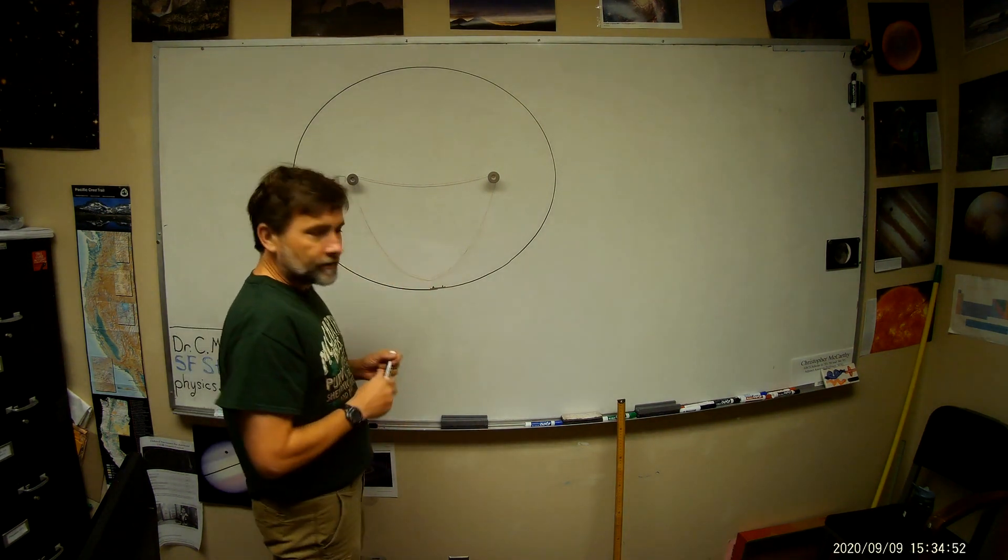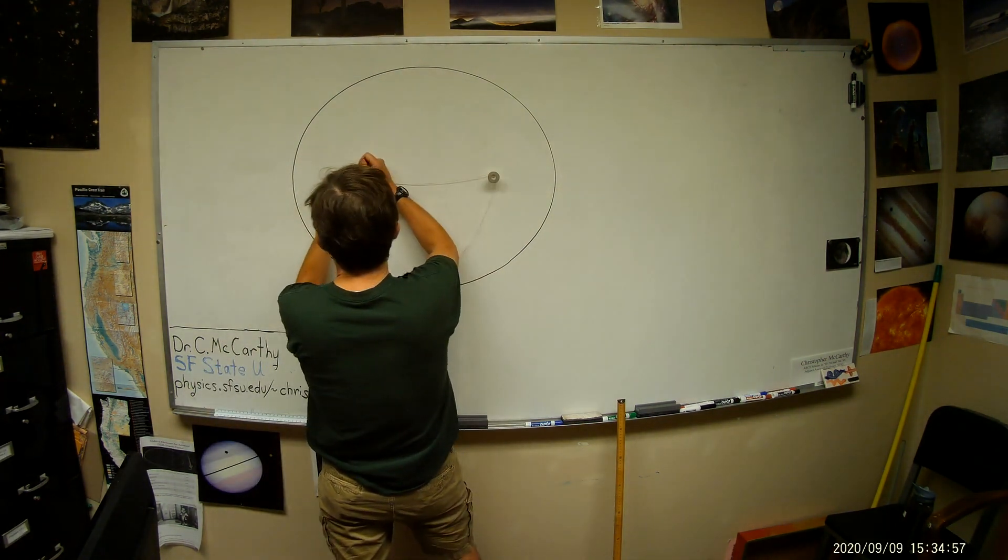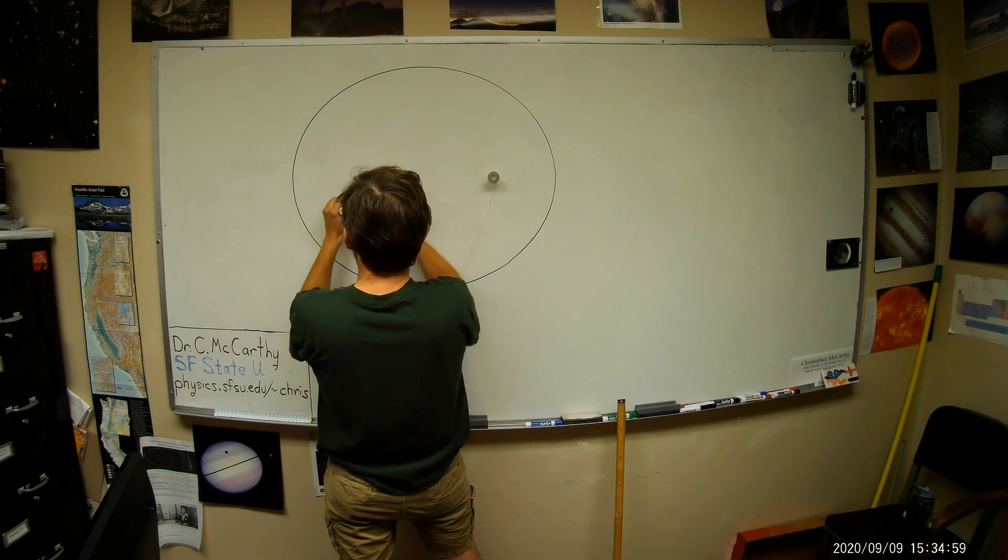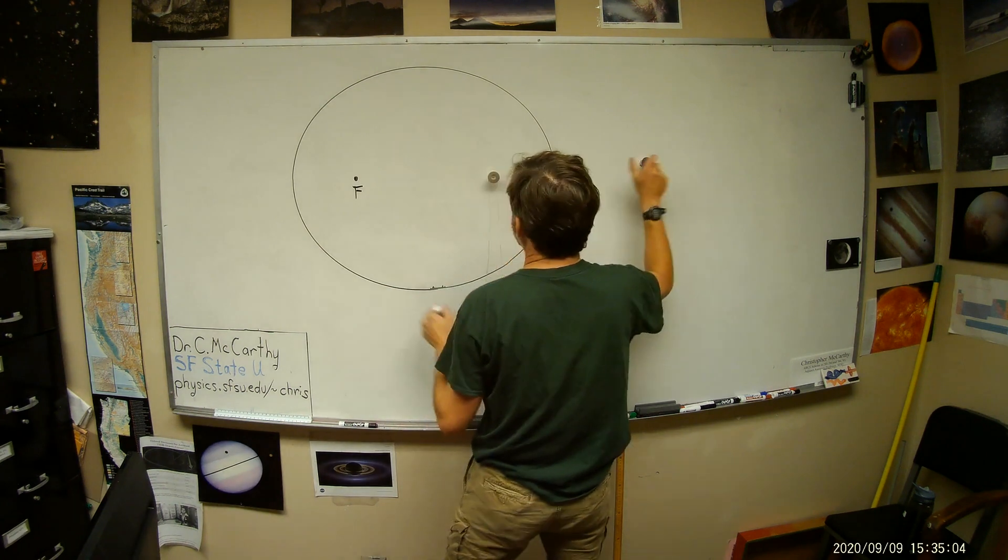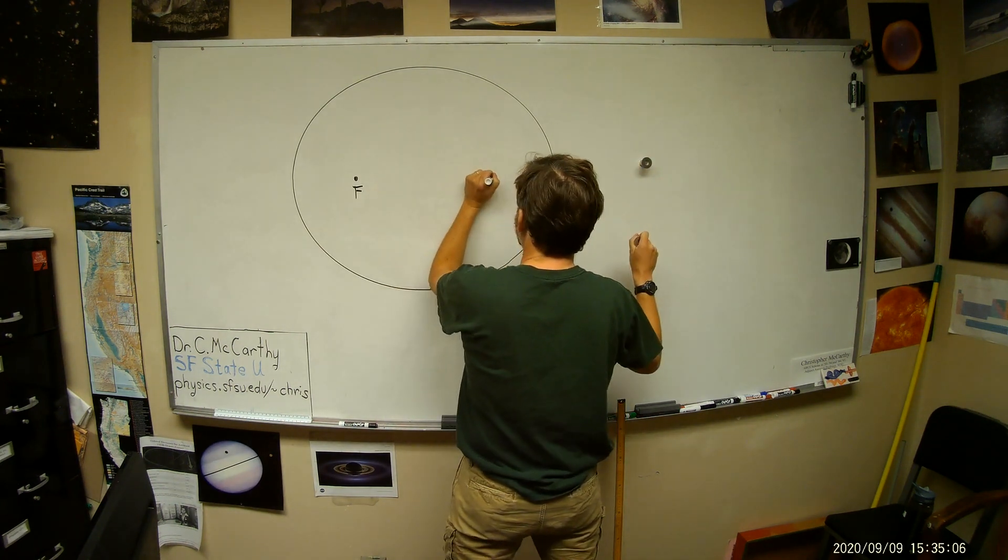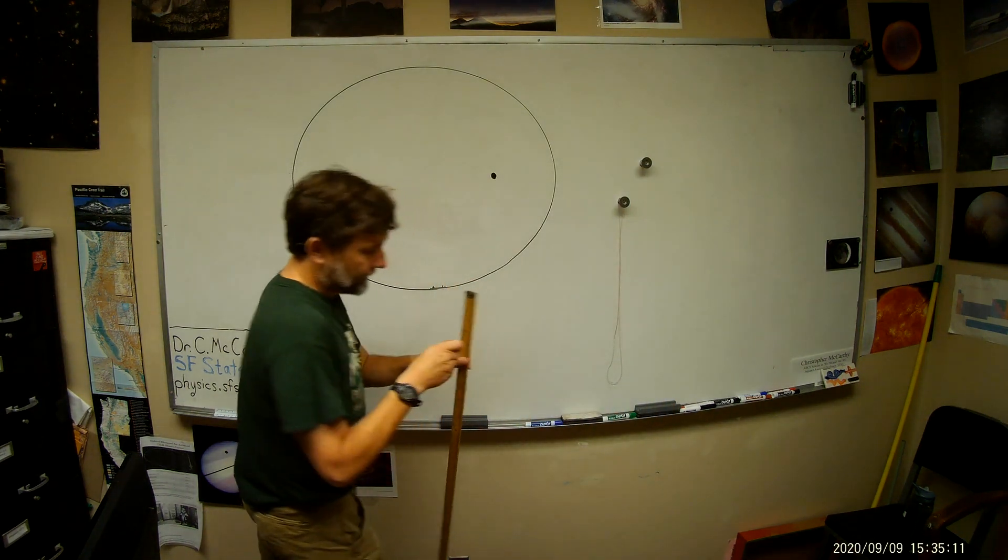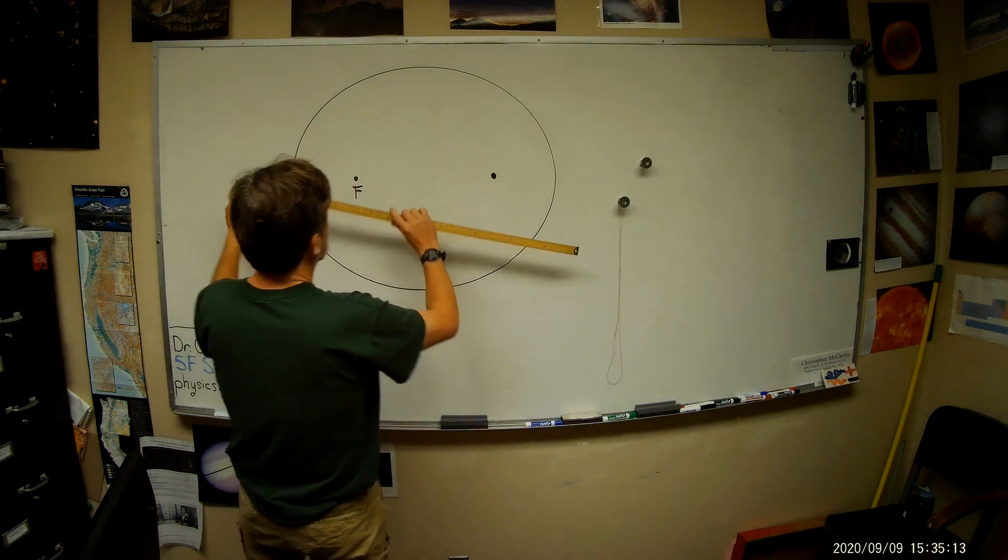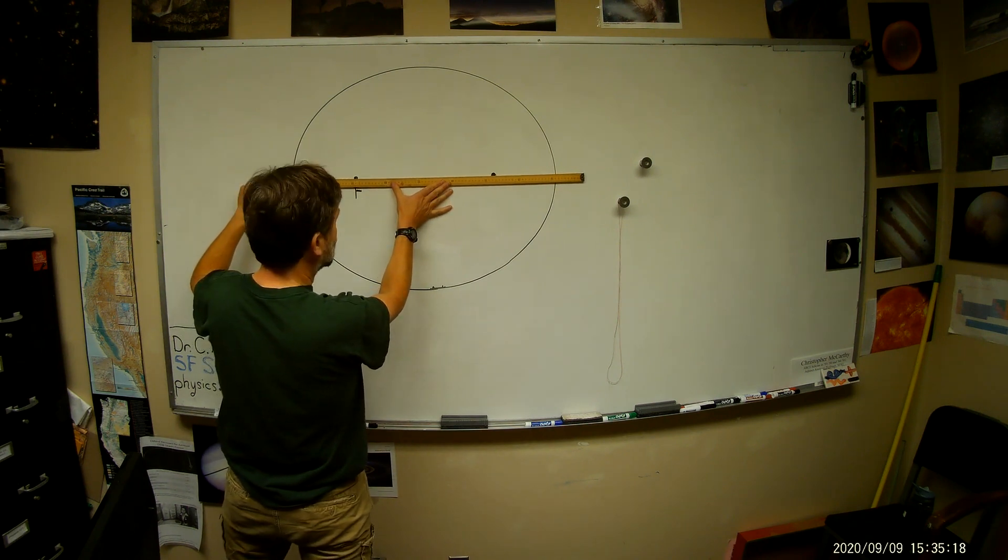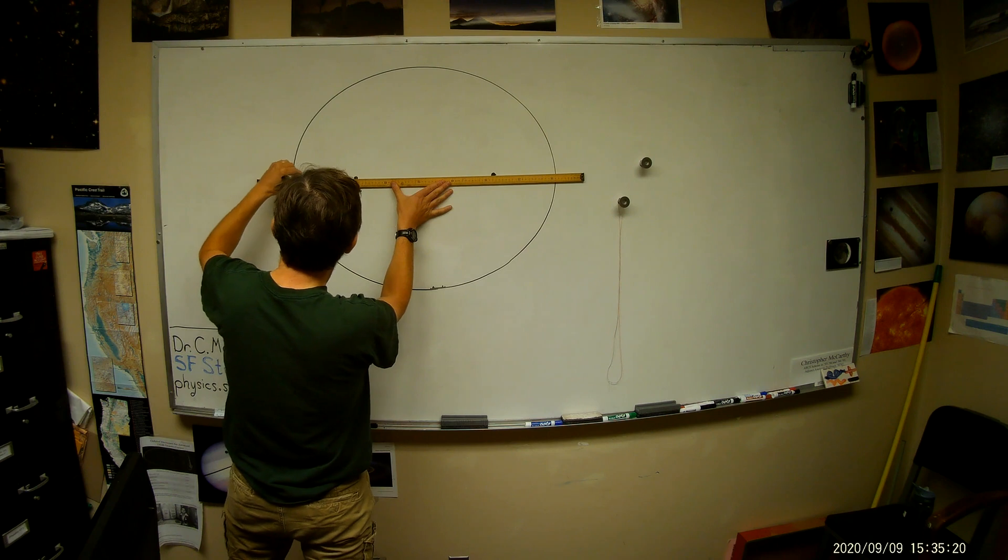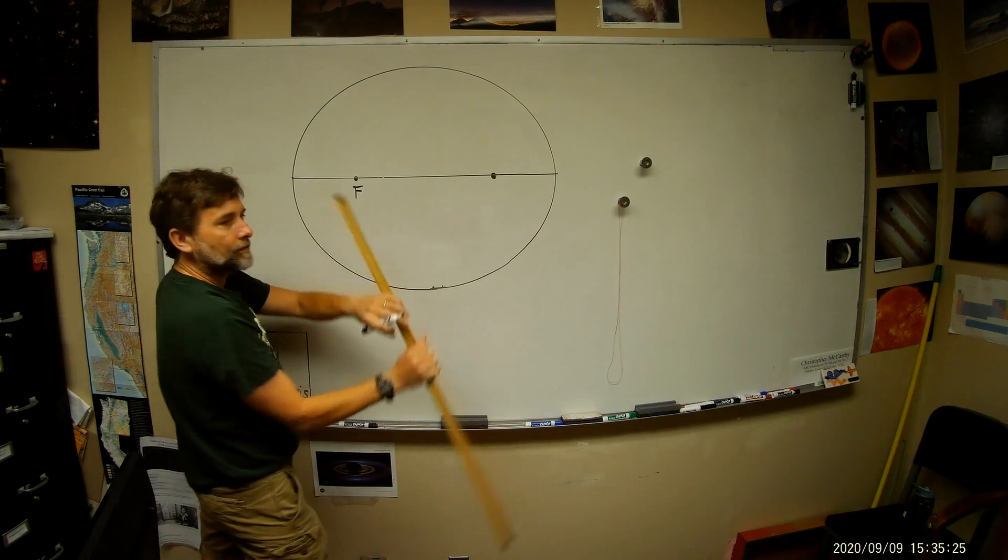It has some characteristics that we might mention. The two focal points we use to draw it. I can just mark them now. Use the letter F for the focal point. And here's the other focal point. The line that connects the two foci is called the major axis. And it's like the diameter of a circle.